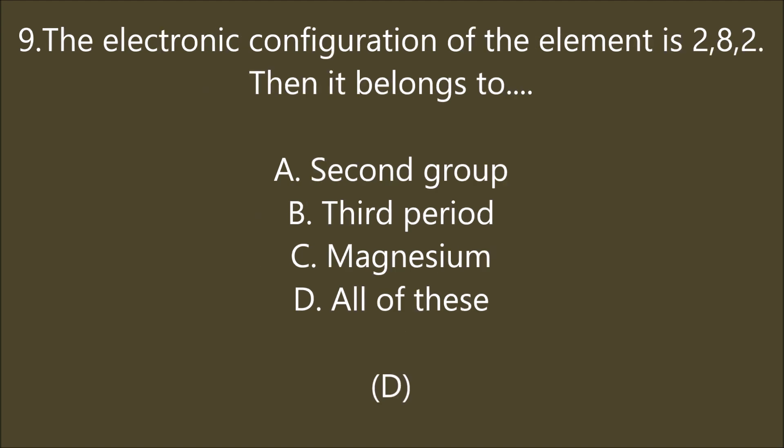The electronic configuration of an element is 2,8,2. Then it belongs to: second group, third period, magnesium, or all of these. D is the right answer — all of these. The given electronic configuration is 2,8,2. It contains three main shells, so it is in the third period. The valence electron count is 2, meaning it belongs to the second group. The element name is magnesium. So D is the right answer.